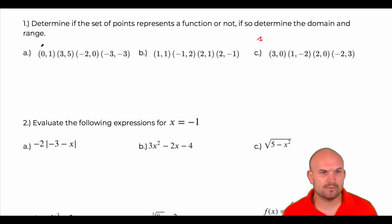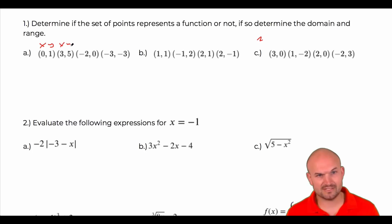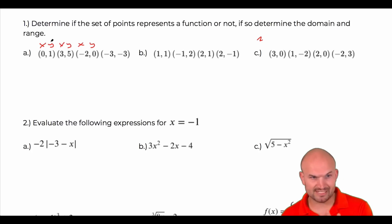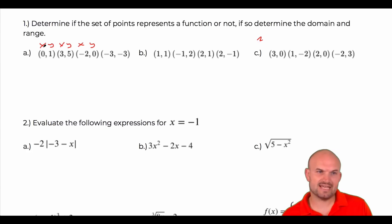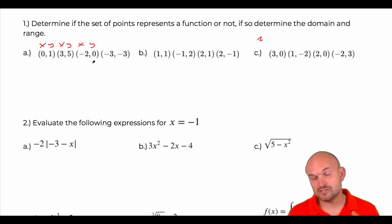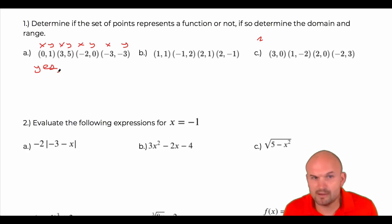You can think of these coordinate points as X and Y coordinates. We could list all the X coordinates — this is an X, Y pair, and those X values are connected to their Y values. Every X can only uniquely go to one Y. Looking at the points: zero goes with one, three goes with five, negative two goes with zero, and negative three goes with negative three. Every X uniquely maps to a Y, so this is a function.